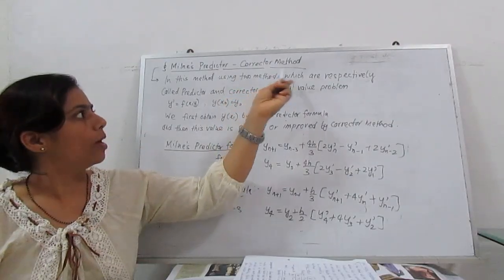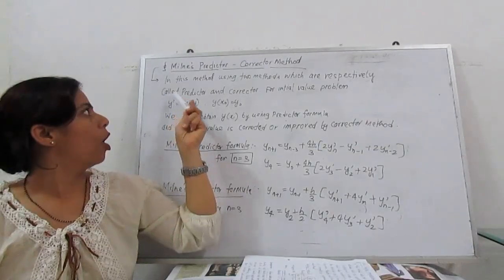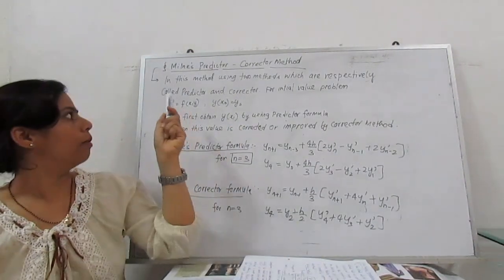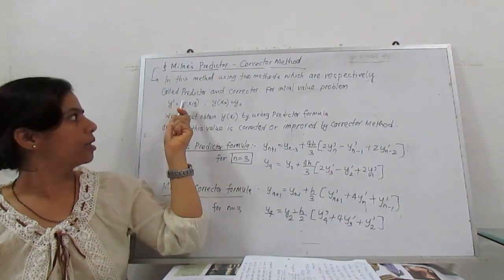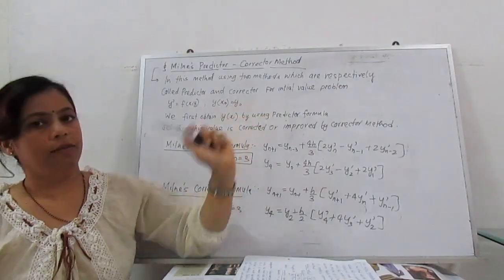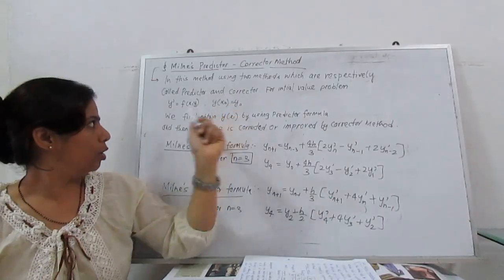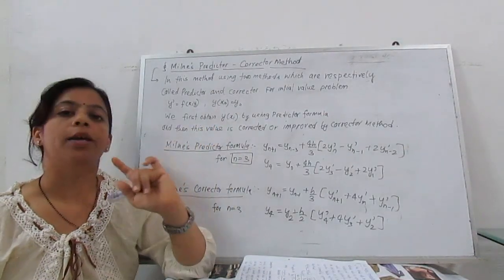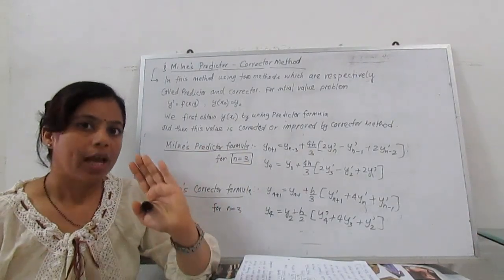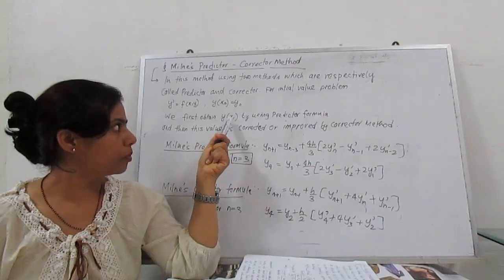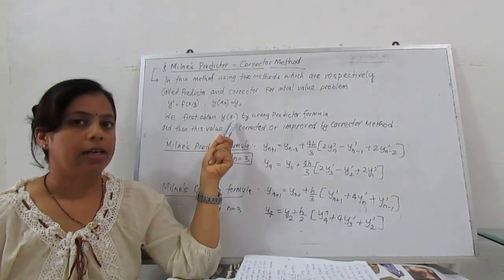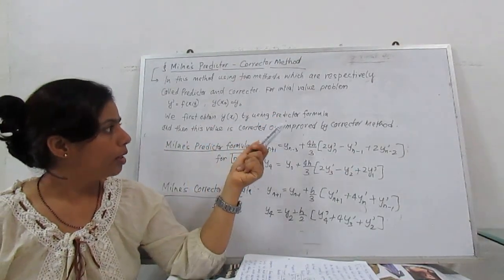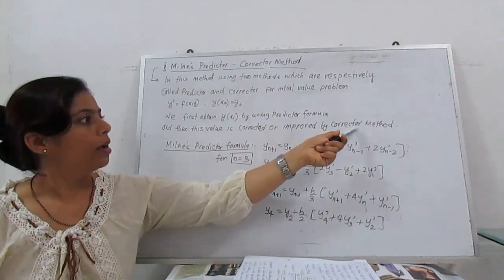In this method there are two methods actually, which are respectively called Predictor and Corrector method. For any initial value problem dy/dx = f(x,y) with initial values y at x₀ is y₀, we first obtain value of y at xᵢ point by using predictor formula, and then whatever we deduce at that point with predictor formula we correct or improve this value by corrector method.